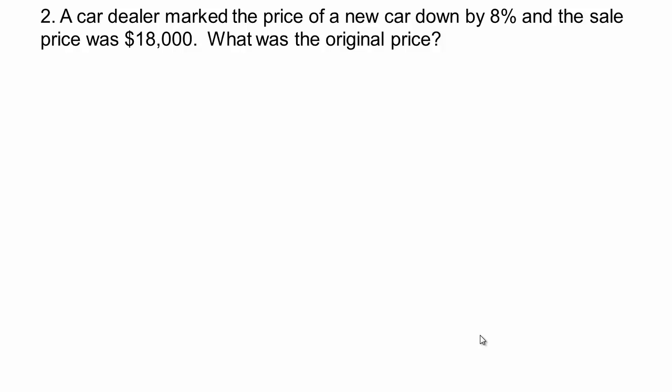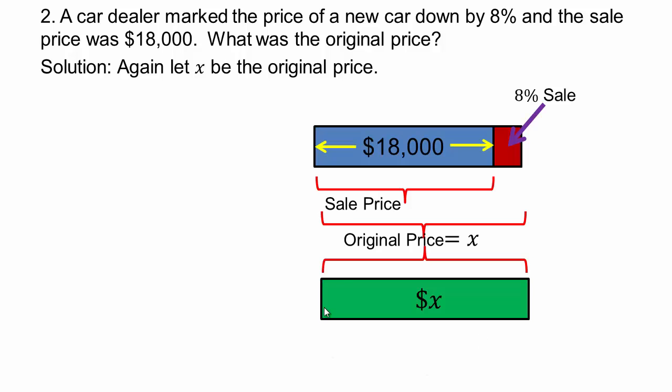Sometimes drawing a picture, a visual aid helps, because then you understand what the problem is all about. So let's say x be the original price of the car. Now the car dealer marked the price of the new car 8% down, and the sale price was $18,000. So this is my sale price, which represents 8% less, 8% less than the original amount.